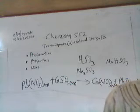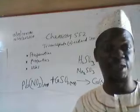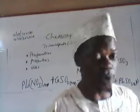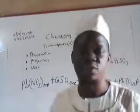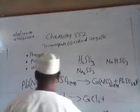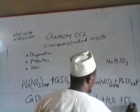The next thing to look at is the properties of trioxosulfate 4 salts. First, the physical properties — their solubility: those that are soluble and those that are not. For chemical properties: all trioxosulfate 4 salts react with acid to liberate sulfur dioxide. So when CaSO₃ is treated with a mineral acid, it forms CaCl₂ plus H₂O plus SO₂ gas.